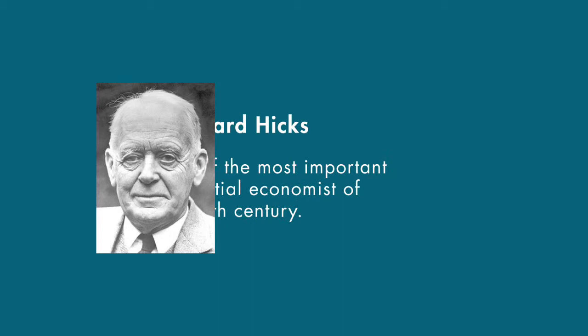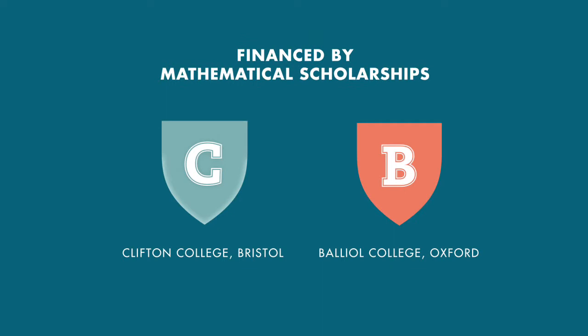This is a brief history of economist John R. Hicks. On April 8, 1904, Sir John Richard Hicks was born in Warwick, England in the United Kingdom. Hicks was considered one of the most important and influential economists of the 20th century. He wanted to study at Clifton College and Oxford with the help of mathematical scholarships, due to the fact that his parents were not financially well off.